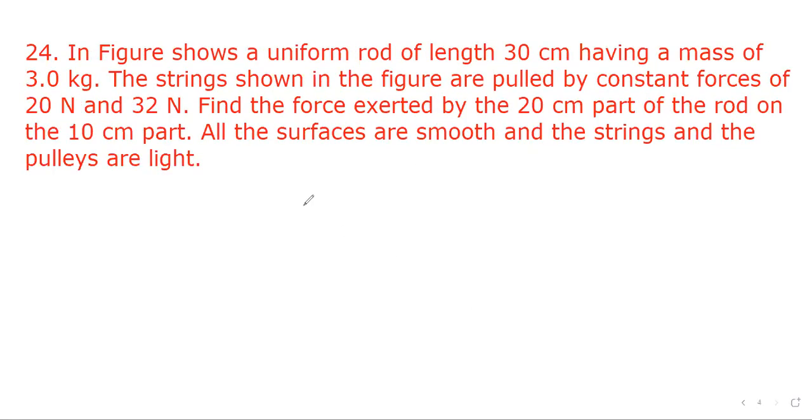Let's see next question. We are given here a uniform rod of length 30 centimeter having mass of 3 kg. So this is 10 centimeter and this is 20 centimeter. The mass is uniformly distributed so we can say mass of this portion will be 1 kg, mass of this portion will be 2 kg.